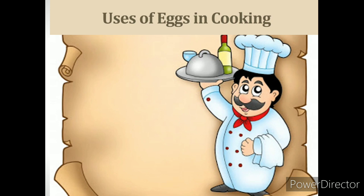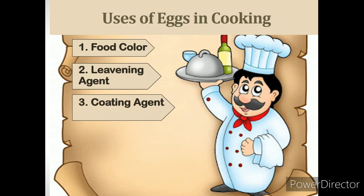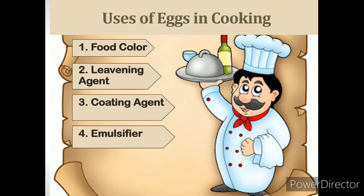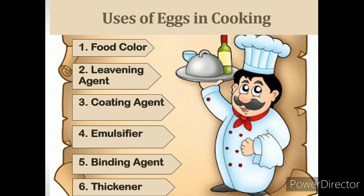Due to such versatility, the egg is considered a primary ingredient in culinary professions. Here are examples of the uses of eggs in cooking: food color, leavening agent, coating agent, emulsifier, binding agent, and thickener.